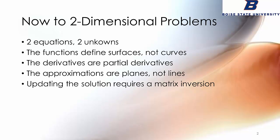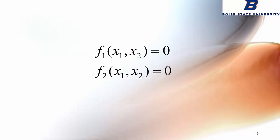We take derivatives along those surfaces. These are now partial derivatives because we have more than one variable in the function. Our approximations or updates represent planes that are parallel to the surface, not lines parallel to the curves. And when we find our update to our guess as we iterate on our solution, it requires a matrix inversion.